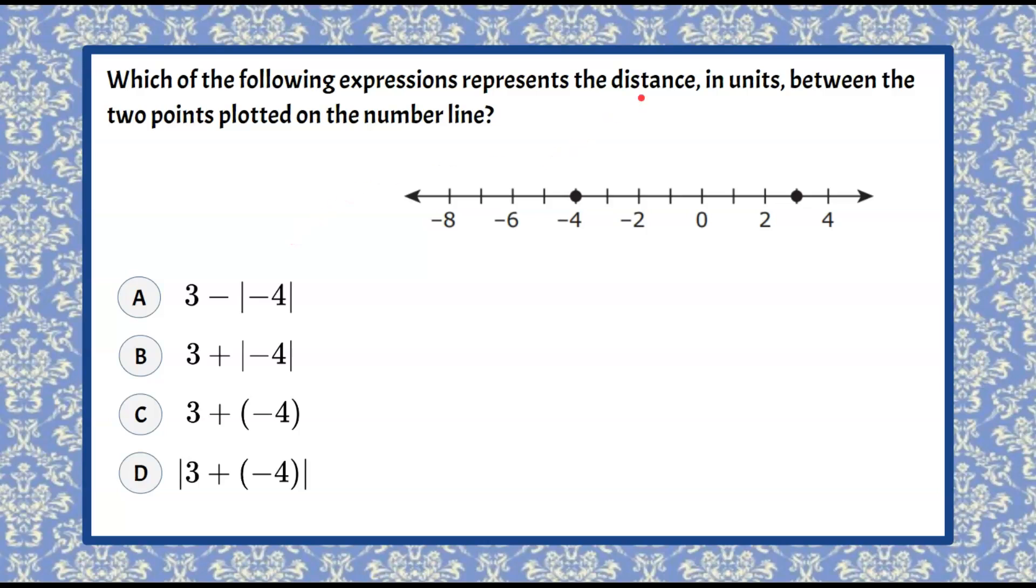Welcome back. So again we're finding distance between these two plotted points on the number line and I'm looking at my answer choices and I can see that I have some absolute value signs here. When we talk about absolute value, it's the positive distance the number inside is from zero. So the absolute value of any number is always positive.